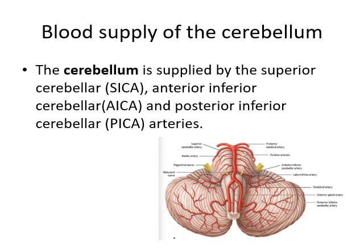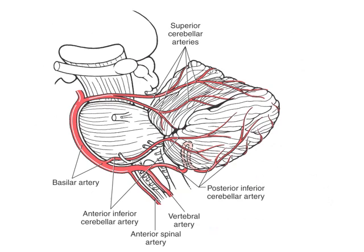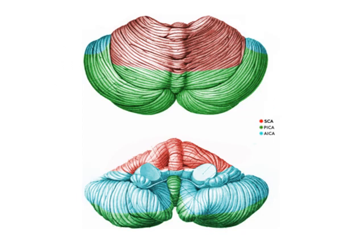Moving on to the blood supply of the cerebellum: the cerebellum is supplied by the superior cerebellar artery, the anterior inferior cerebellar artery, and the posterior inferior cerebellar arteries. These branches supply the whole of the cerebellum. You can see how the basilar artery gives off the branches that cross the cerebral peduncles and supply the whole of the cerebellum. The cerebellum also has similar territories supplied by the three major branches, just as the cerebrum does.